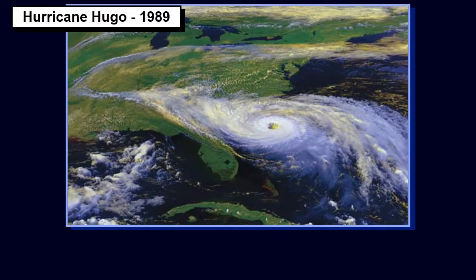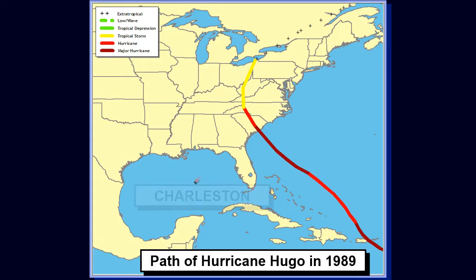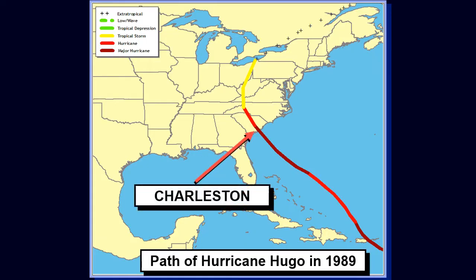Hurricane Hugo hit Charleston in 1989. Though the worst damage was in nearby McClellanville, the storm damaged three-quarters of the homes in Charleston's historic district. The hurricane caused over $2.8 billion in damage. This is the path of Hurricane Hugo in 1989.